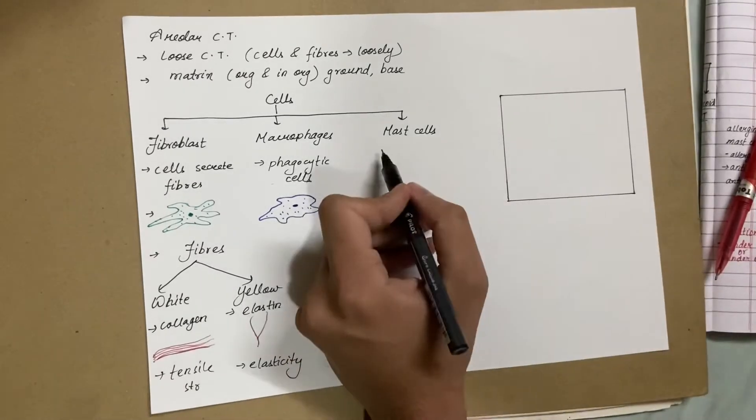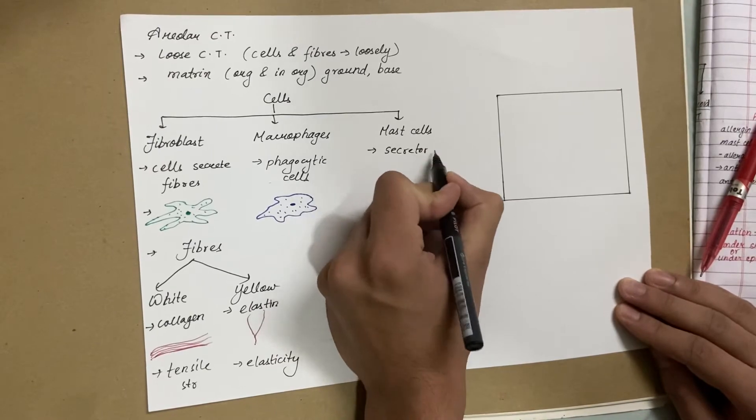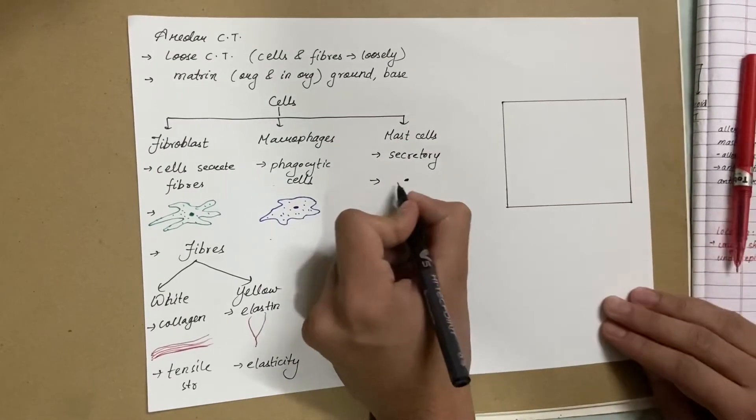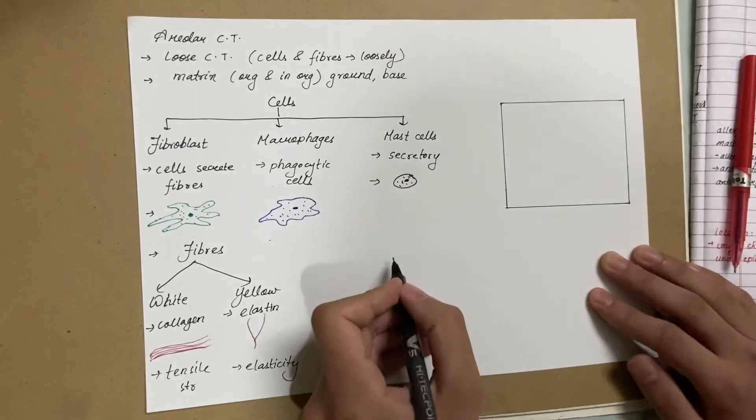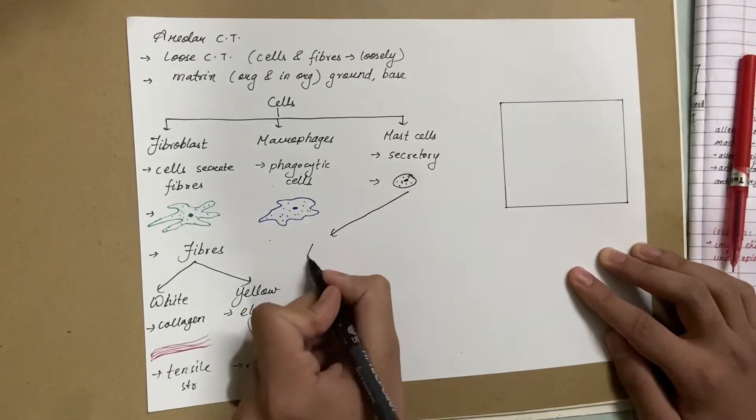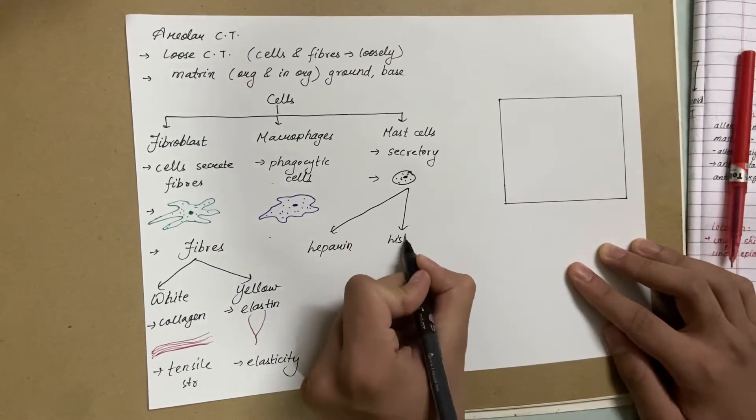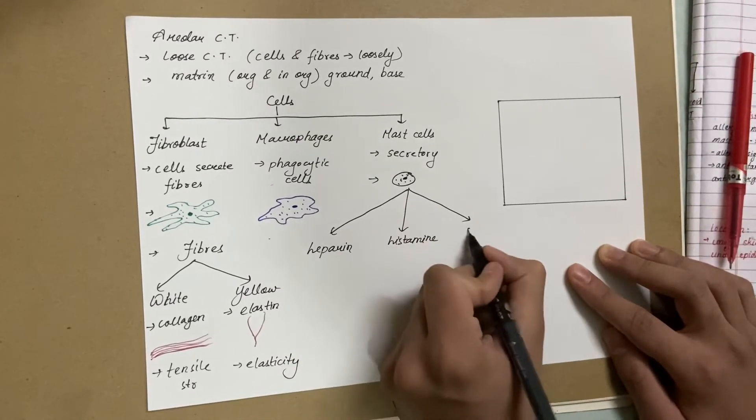Finally we have the mast cells. Mast cells are secretory cells and they are ovoid in structure. It secretes three major enzymes: heparin, histamine, and serotonin.